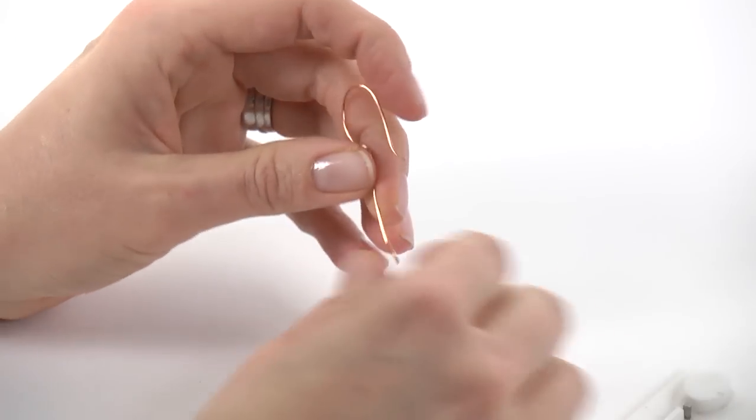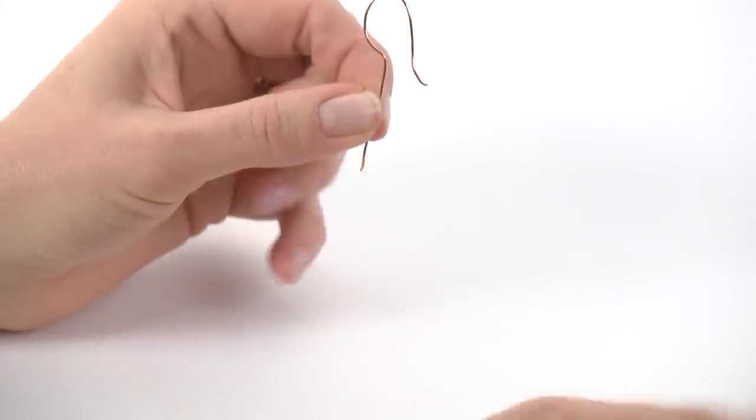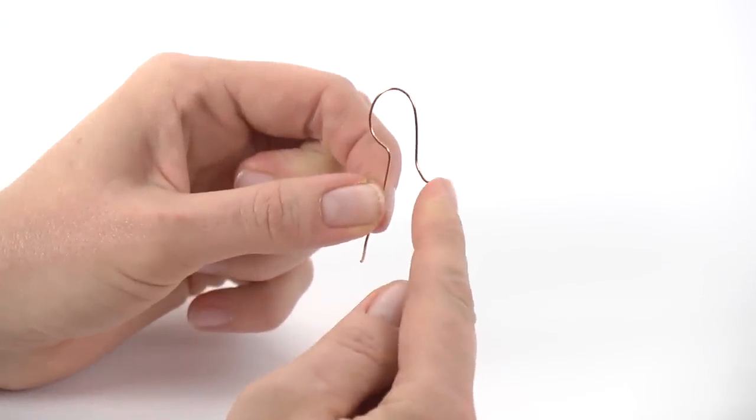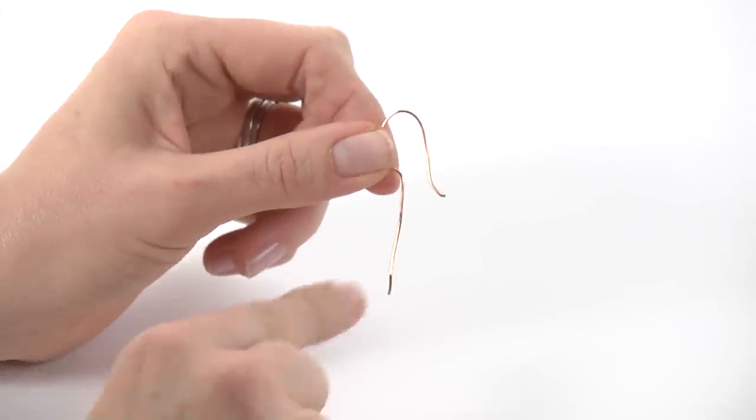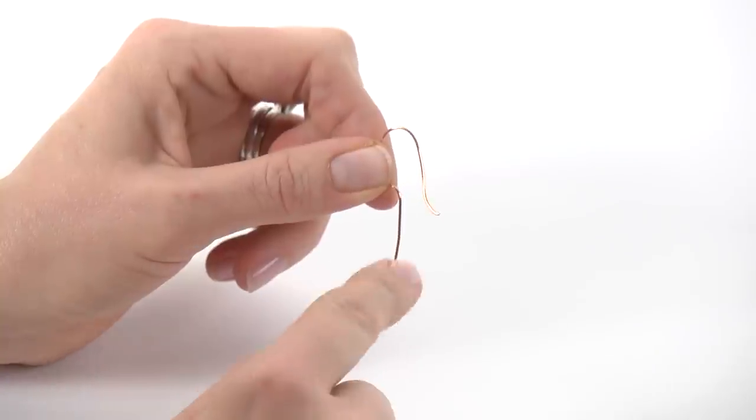I would recommend using a wire rounder to take the sharpness away from the piece that goes through your ear. Then you can attach whatever you like to the bottom, such as a bead, wrapped loop, or even a charm.